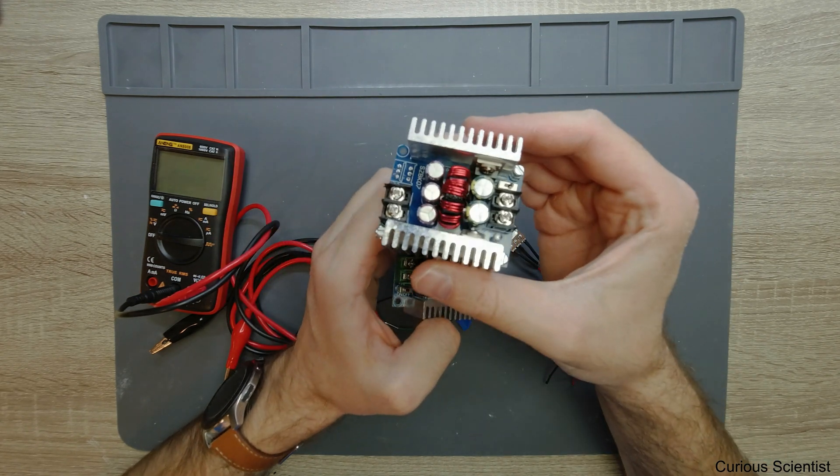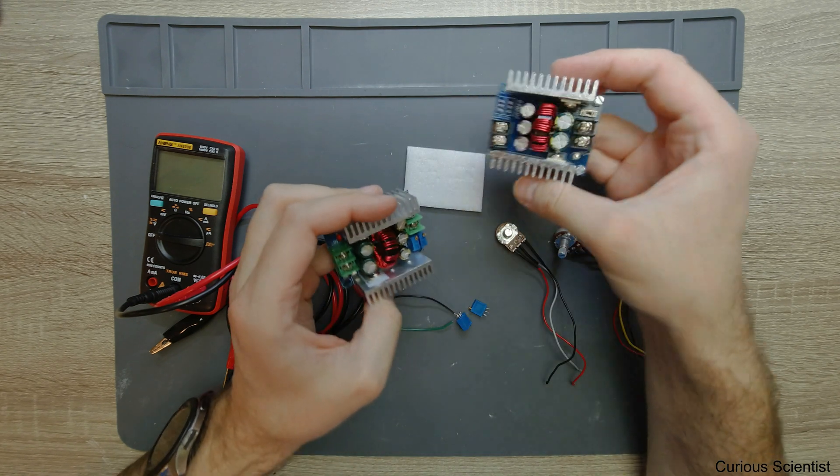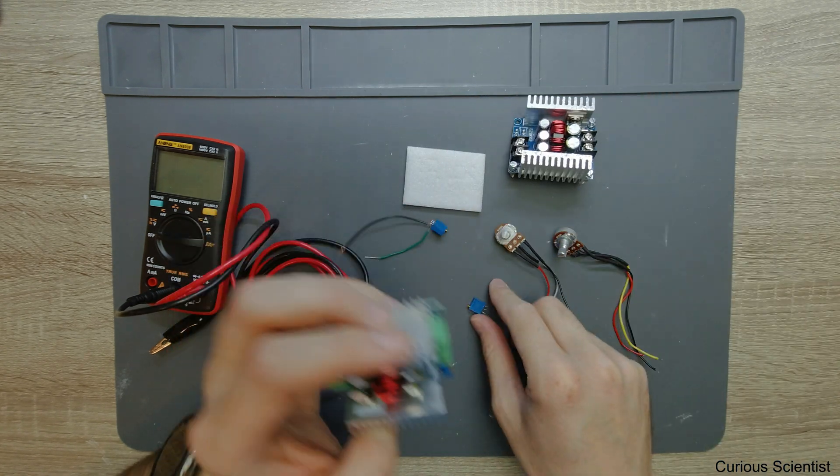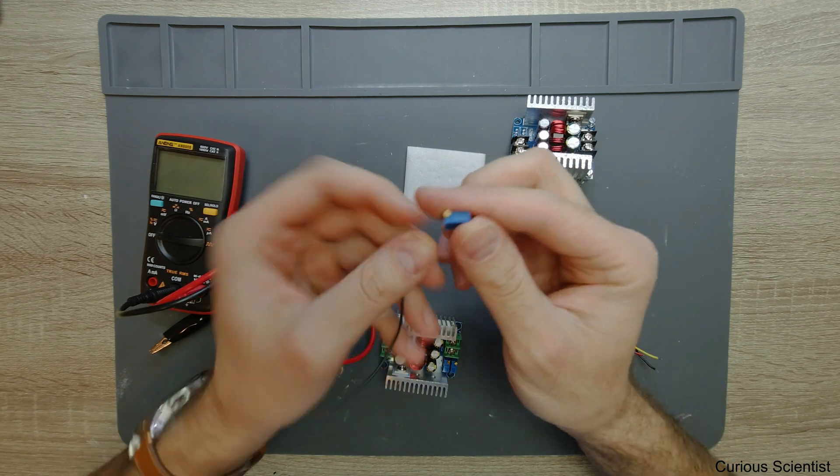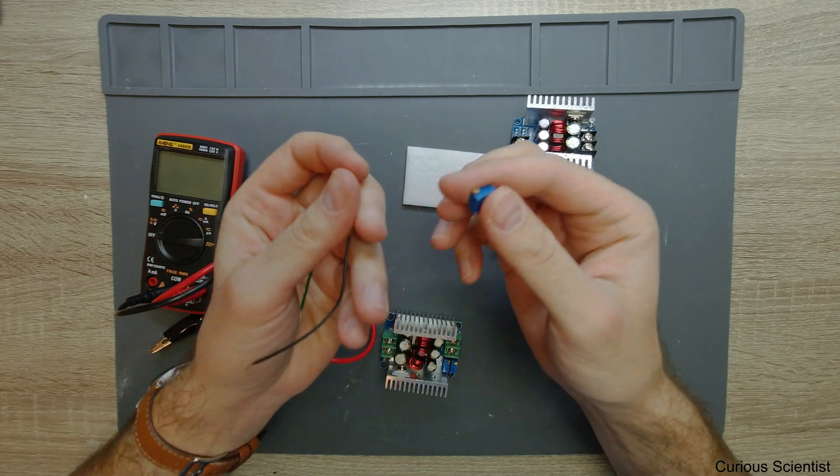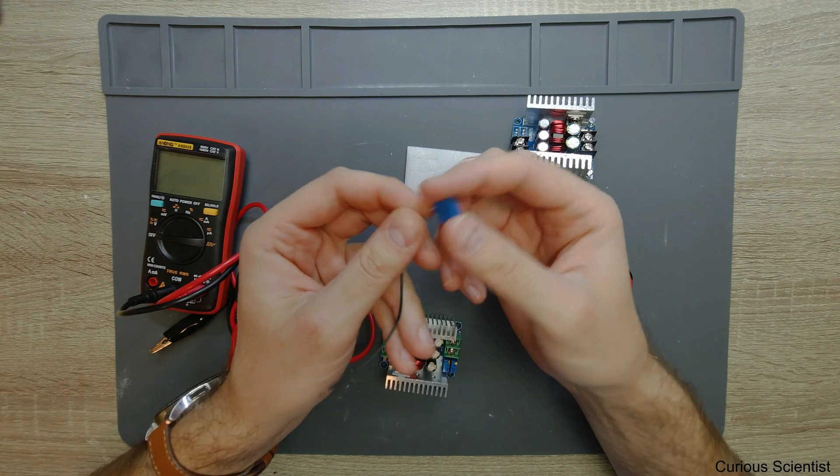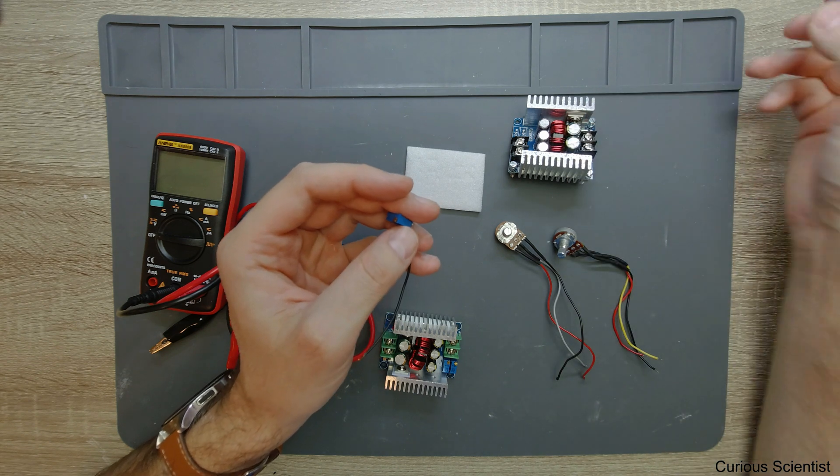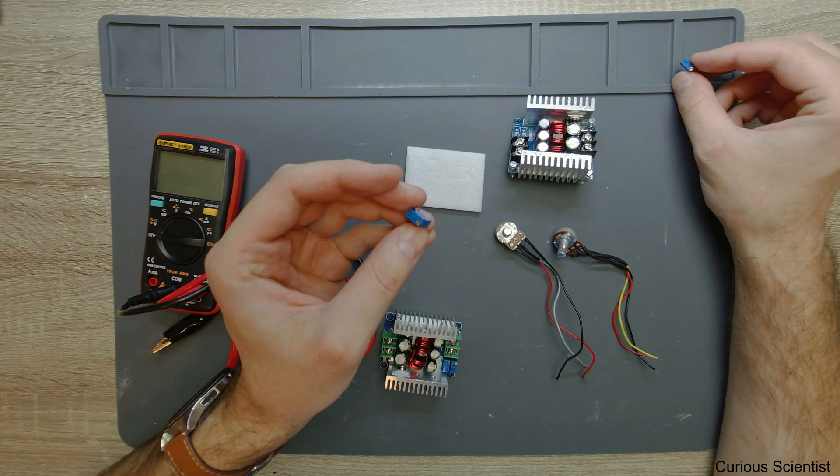As you can see, I removed the trimmer potentiometers here because we can replace them. Here are the removed potentiometers. There's a screw here and you turn the screw to change the resistance of this circuit element, and then you change the output voltage and output current by changing each of these.